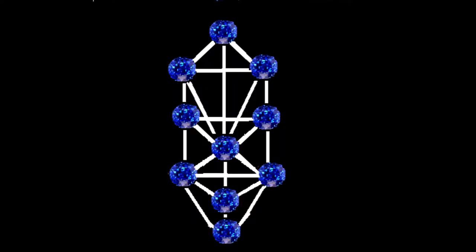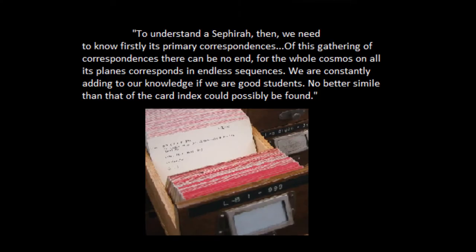This introduction to the Kabbalah Tree of Life was challenging. The information is complex, and there are many opinions and interpretations on the topic. There are many systems applied to the Tree of Life, and many teachers with different opinions, intentions, and interpretations. Part of the information has been lost because the Catholic Church persecuted the Jewish people who practiced Kabbalah, because it taught a process of how to develop a direct personal relationship with the Creator. The system is simple, and yet complex at the same time. As Dion Fortune explains: 'To understand a Sephiroth, we need to know firstly its primary correspondences. Of this gathering of correspondences there can be no end, for the whole cosmos, on all its planes, corresponds in endless sequences. We are constantly adding to our knowledge if we are good students.'